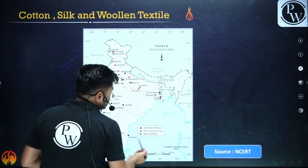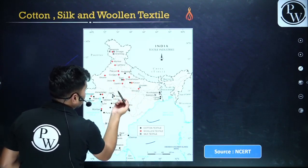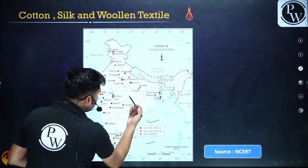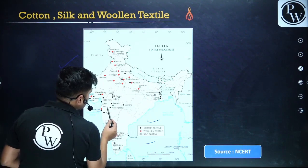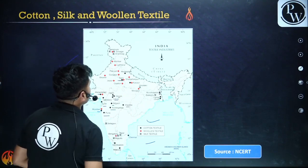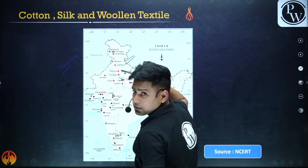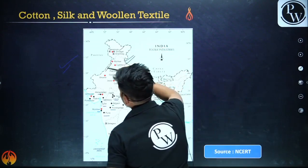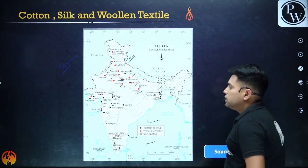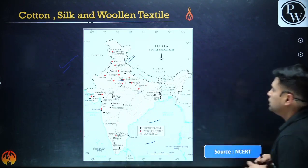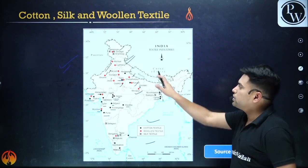Looking at the map from the NCERT book, the different kinds of cotton, woolen, and silk textile industries are marked. Cotton textile centers include Muradabad, Kanpur, Murshidabad, Hooghli, Wardha, Aurangabad, Jalgaon, Indore, Ahmedabad, Mumbai, Surat, and Pune. Woolen textile centers marked include Amritsar and Ludhiana — famous for woolen textiles and hosieries — along with Srinagar, Panipat, Bikaner, Jaipur, and others.